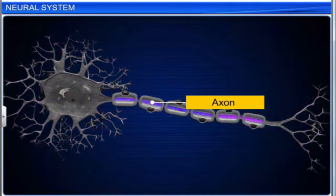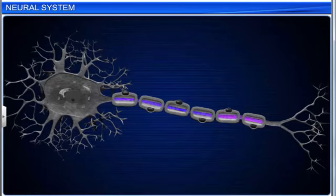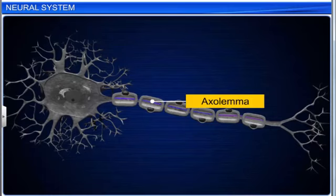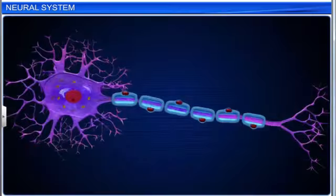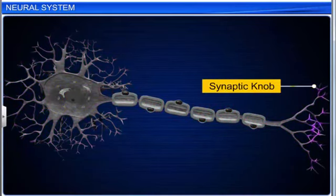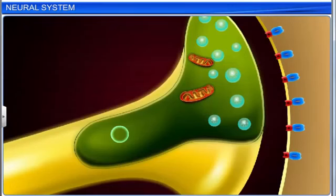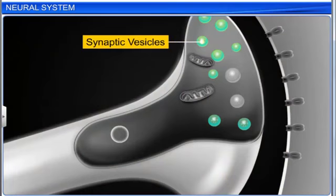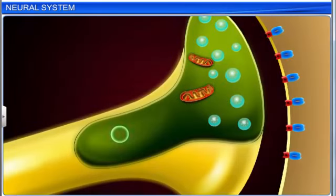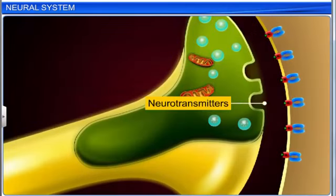An axon is always single. It is covered by a plasma membrane called axolemma. The inner fluid of an axon is known as axoplasm. The distal branched end of an axon forms a knob-like swelling called a synaptic knob. The synaptic knob possesses synaptic vesicles which contain chemicals called neurotransmitters.